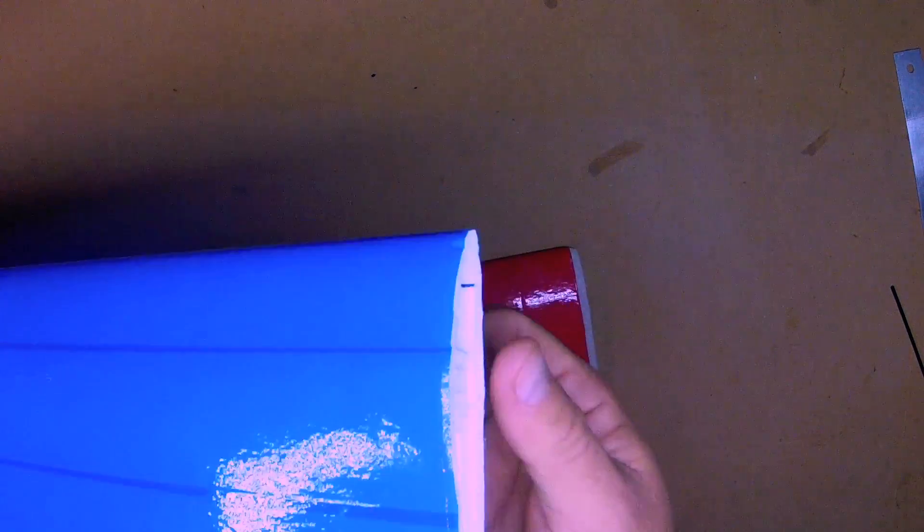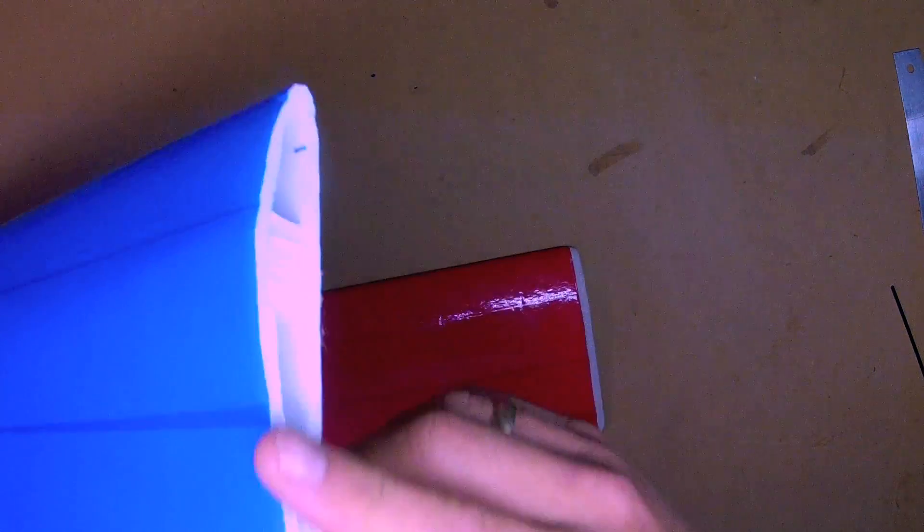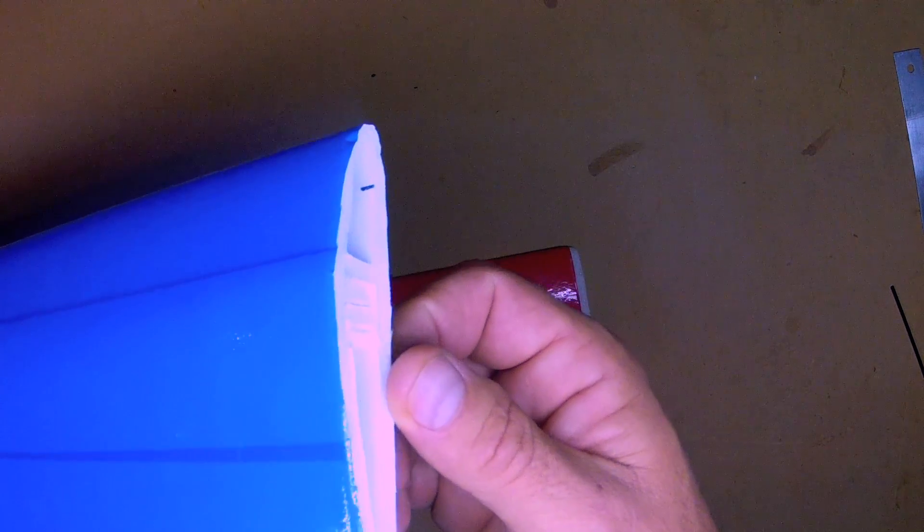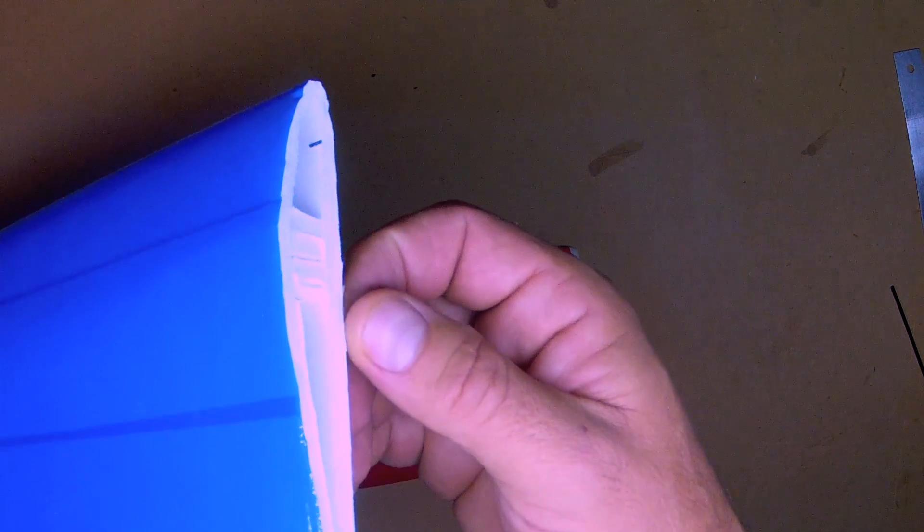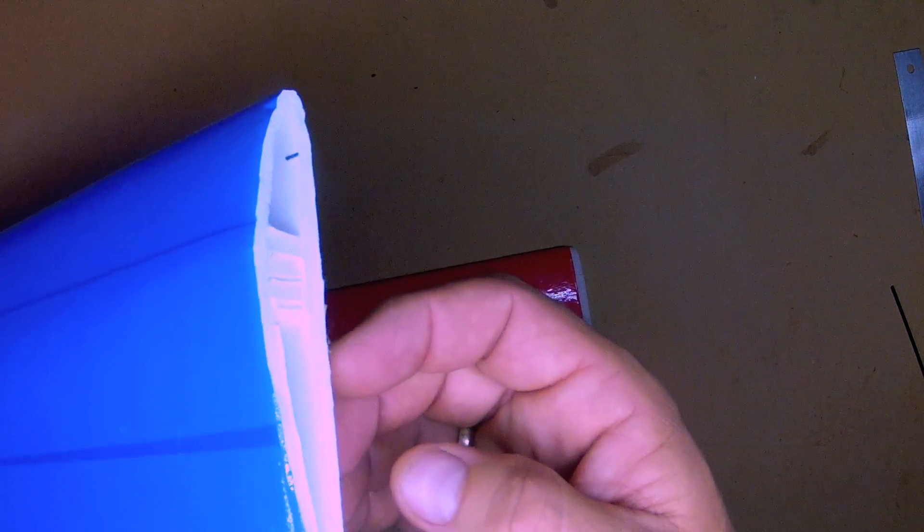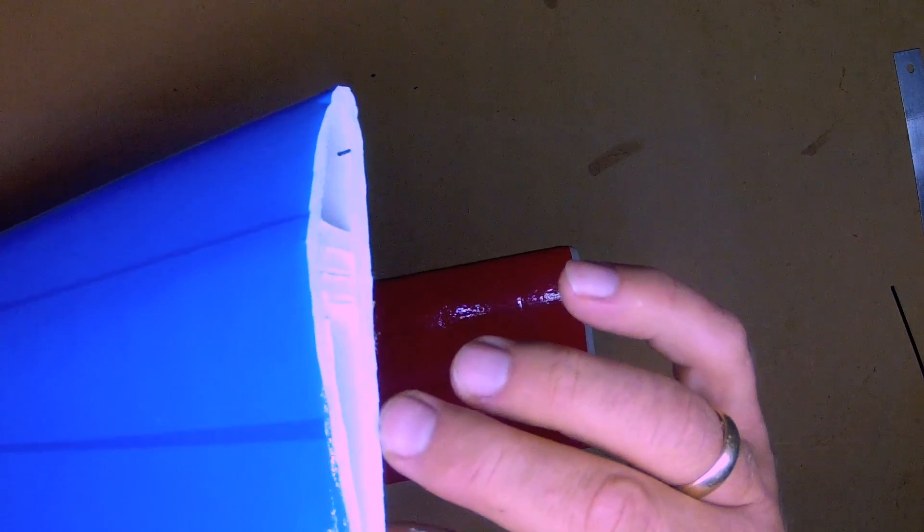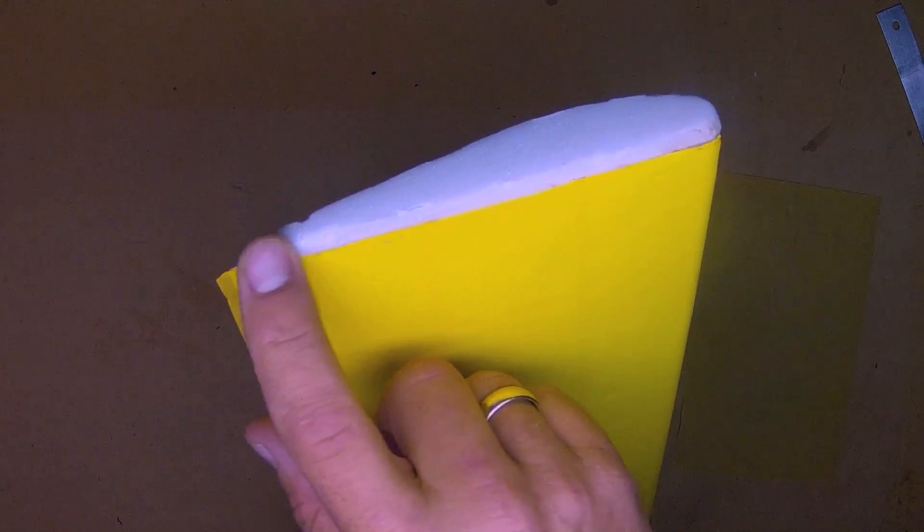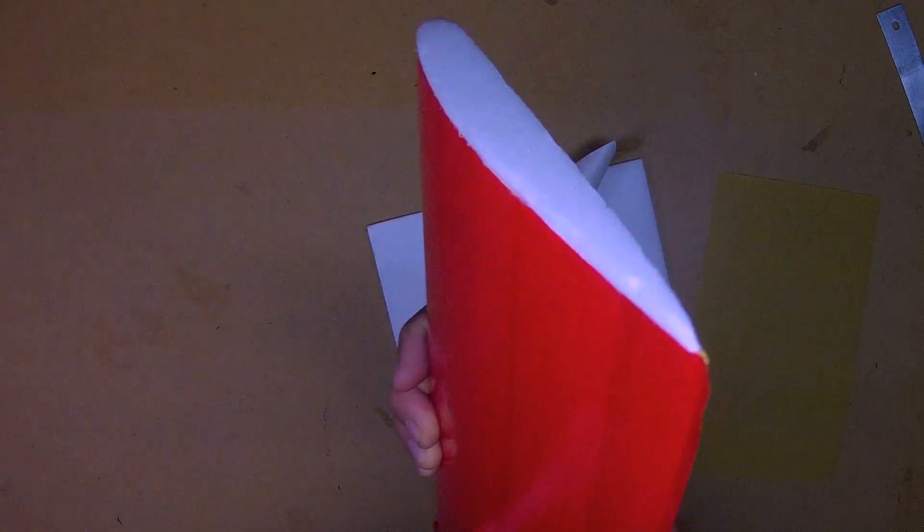Now that you've got your canard airfoil completely formed, the trailing edge finished, it's time to cap the wing tips. Now it certainly will fly perfectly fine without caps, however in transit, landing, handling, this paper will always tend to peel up, and especially if there's any moisture in your environment it will dramatically accelerate that peeling up.